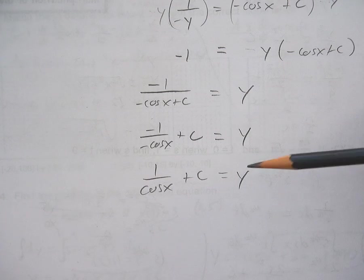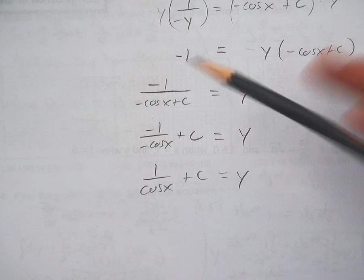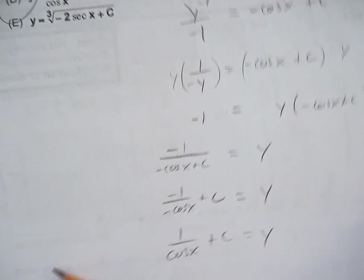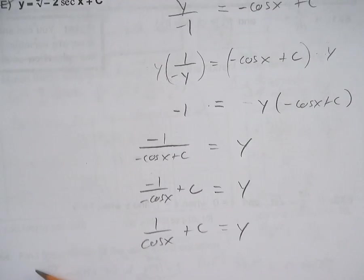Yippee-ki-yay. And again, the reason why I can take that c out of the denominator is because it doesn't matter what plus c is. c could be anything. c is something I am going to find later. It doesn't matter where c goes, what c is doing. It does not matter. c is irrelevant. See ya!